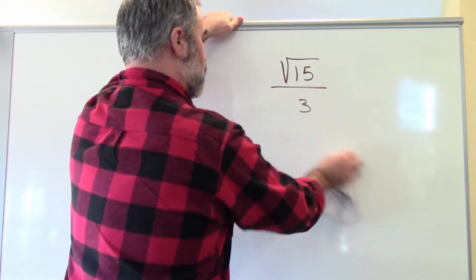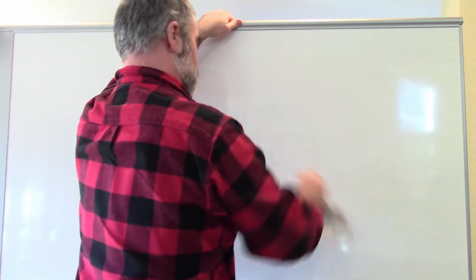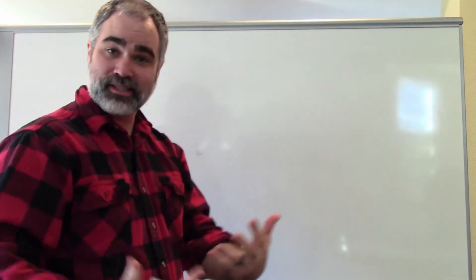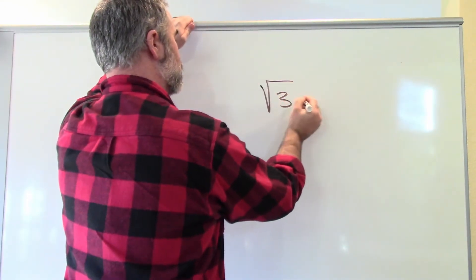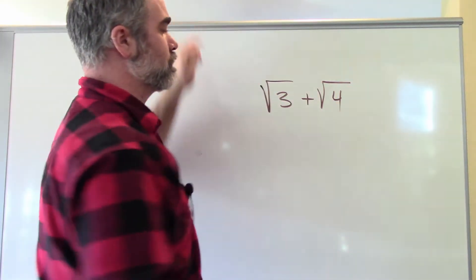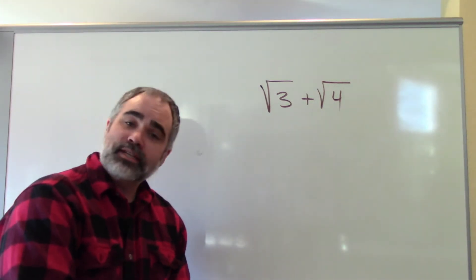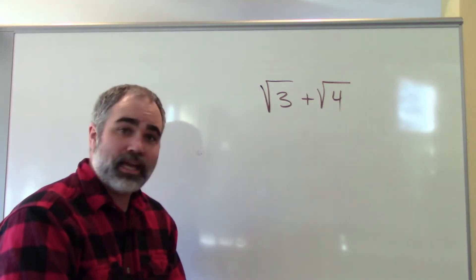But if square roots are just like variables, is it possible to add and subtract them? For example, can I add the square root of 3 and the square root of 4? And the answer is no, you cannot.